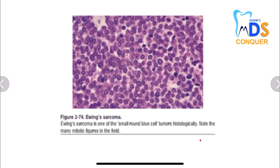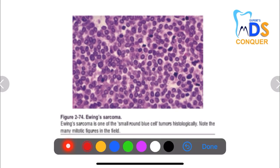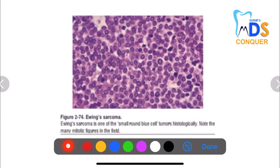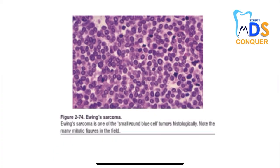Next, regarding sarcomas — here you can see small round blue cell tumors histologically, and you can also see multiple mitotic figures in the field. Small round blue cells are seen with Ewing sarcoma histologically.